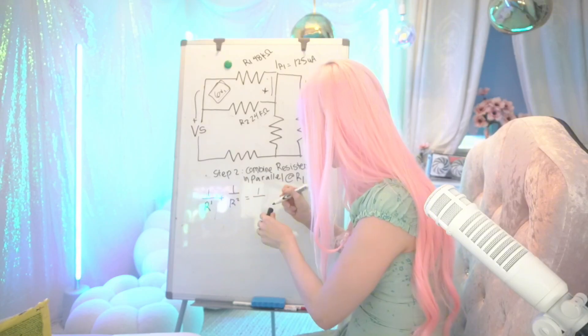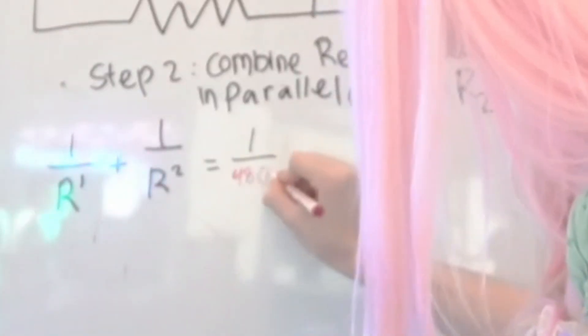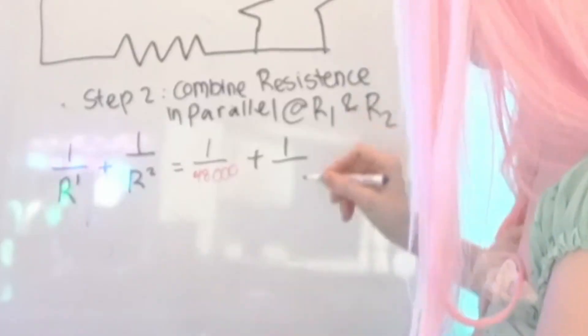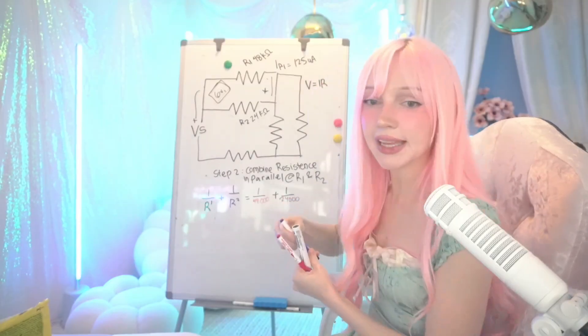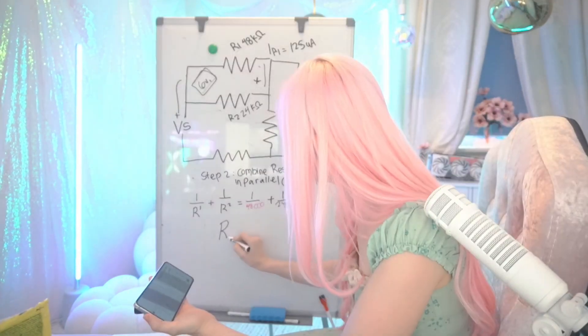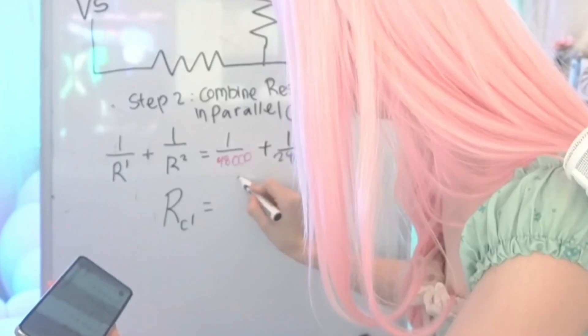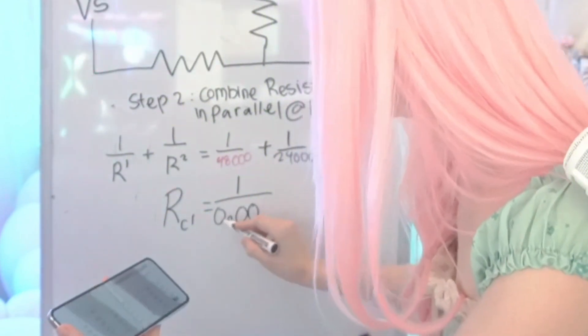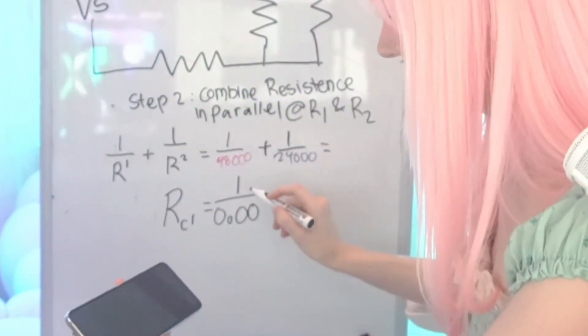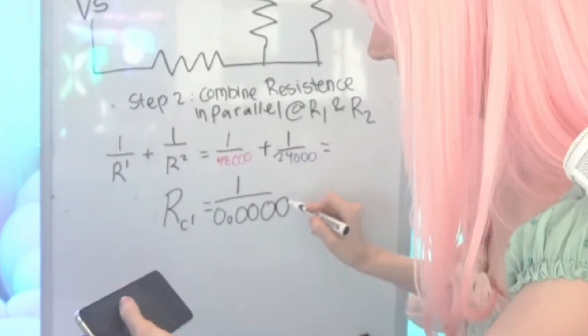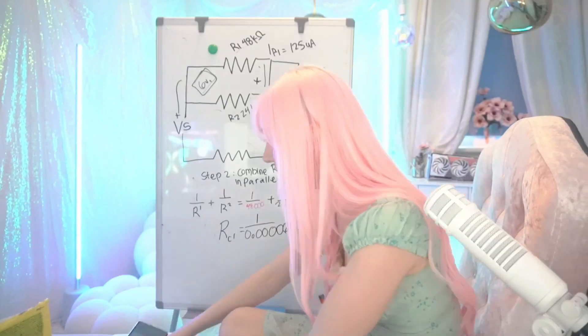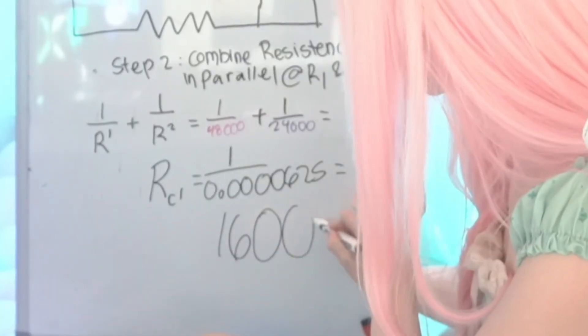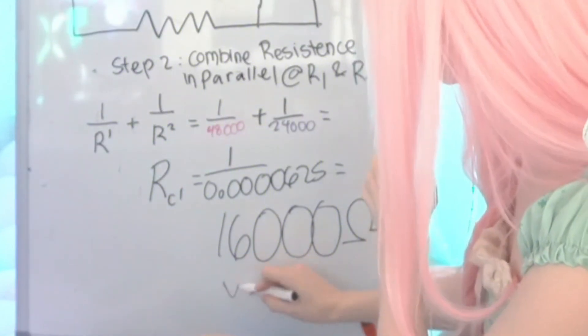So it's going to be 1 over 48,000 plus 1 over 24,000. So the number we're going to get is going to look not good. So R combination 1, 1 over this number that I got, which looks like 0.0000625. And our answer is 16,000 ohms. Let's go.